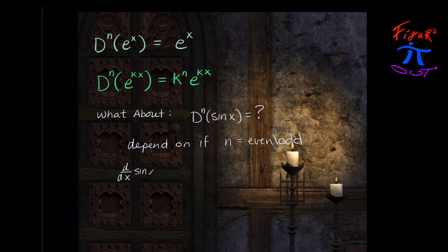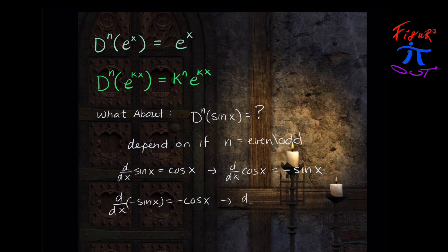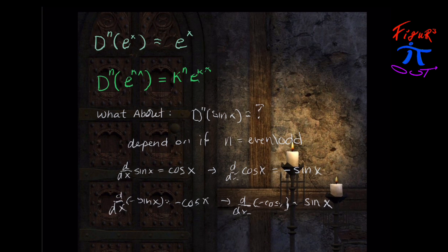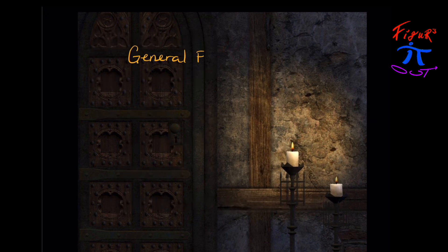Whether n is even or odd will tell us something about what the derivative of sine is. So the general formula will have to be something like a piecewise function, meaning it's sine sometimes and cosine other times, and positive sometimes and negative other times. It would be nice if there were just one general formula for all functions — in other words, can we just find the n-th derivative for any f of x?